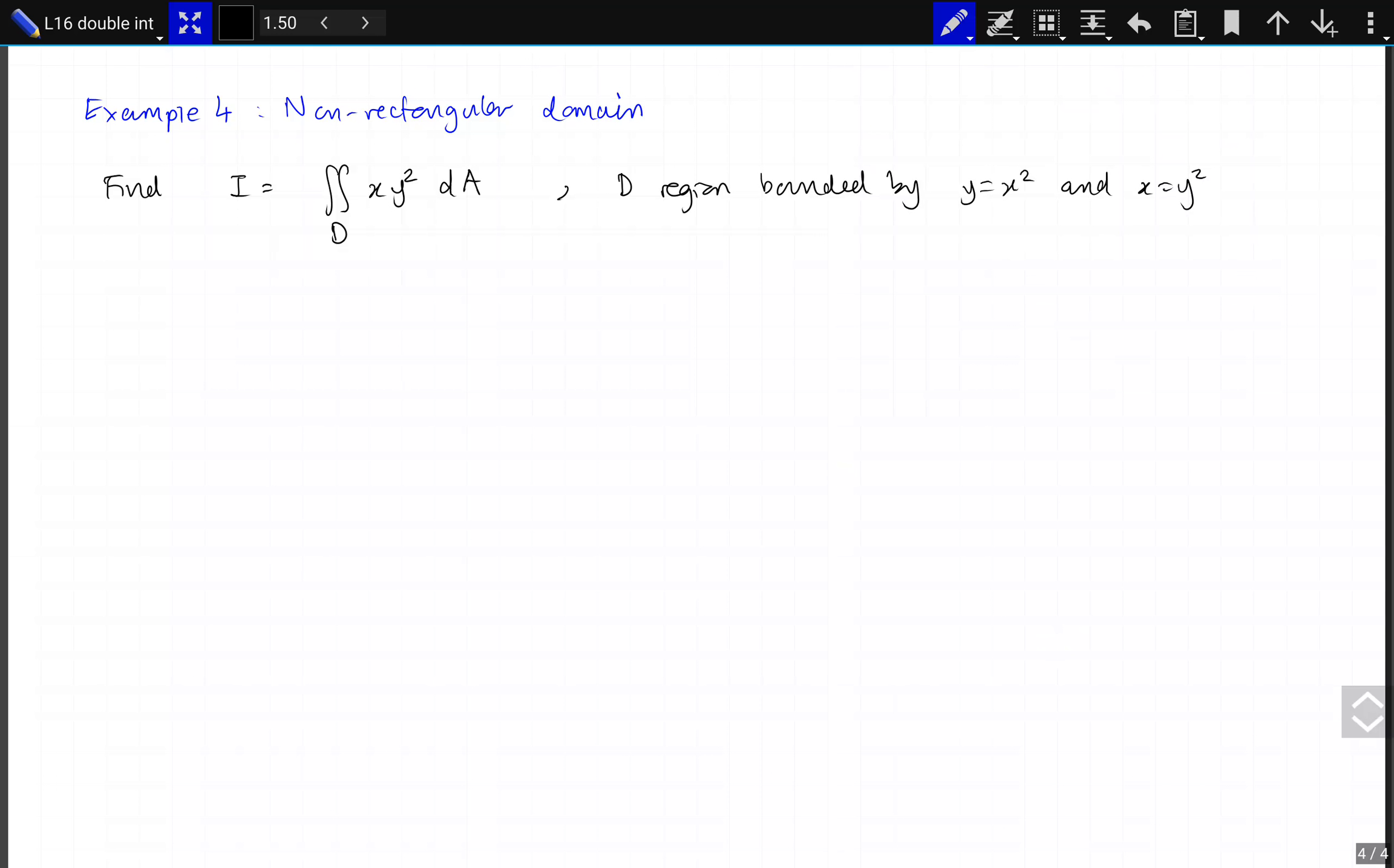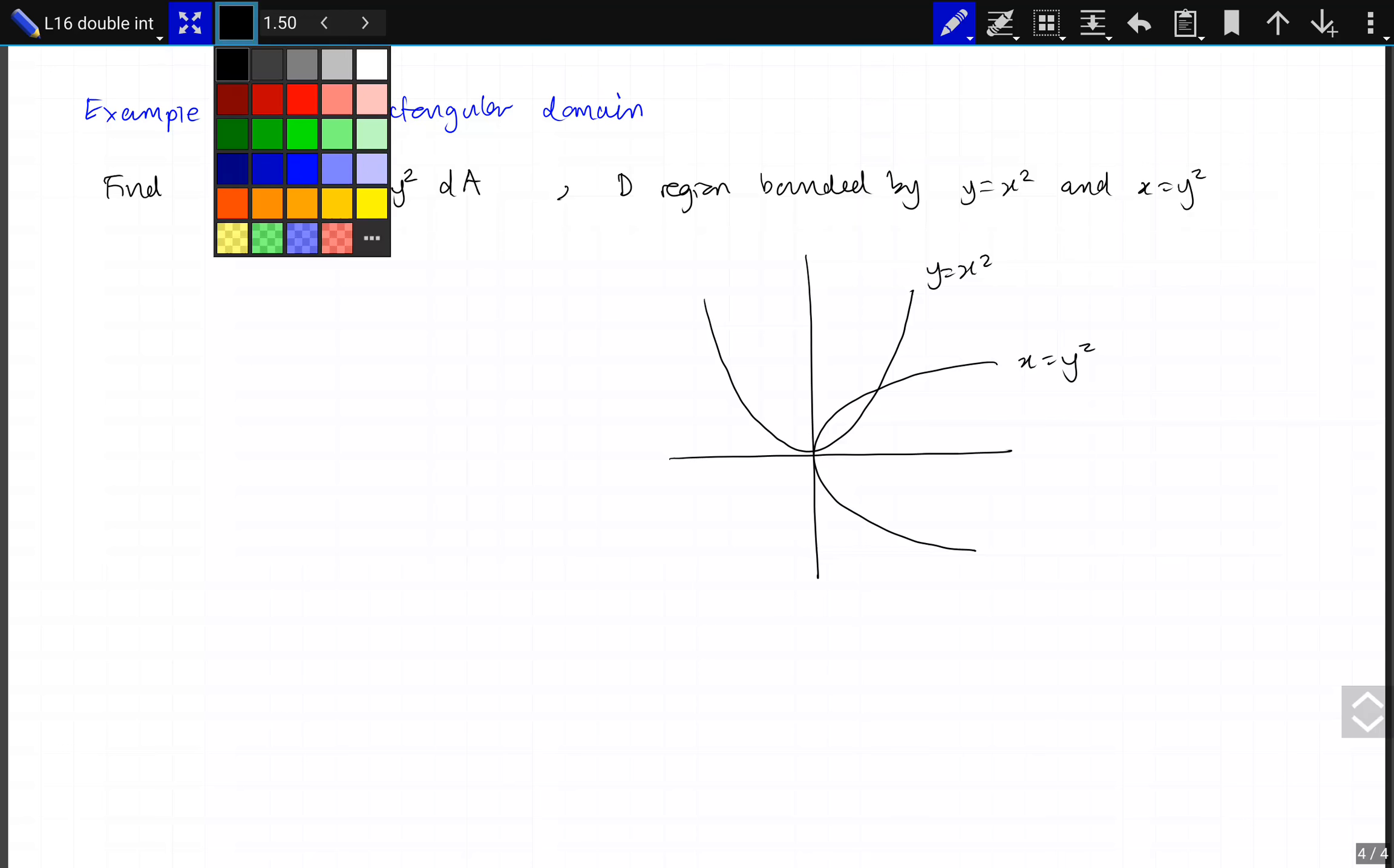I can't stress how important it is to draw this diagram. Otherwise, you're never going to get the bounds right. So here you have y equals x squared, and the other one, x equals y squared. Our domain of interest is this one.